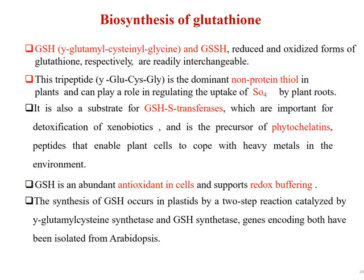Biosynthesis of glutathione: GSH and GSSG, the reduced and oxidized forms of glutathione respectively, are readily interchangeable. This tripeptide is the most dominant non-protein thiol in plants and can play a role in regulating the uptake of sulfate ions by plant roots. It is also a substrate for glutathione S-transferases, which are important for detoxification of xenobiotics, and it is the precursor of phytochelatin peptides that enable plant cells to cope with heavy metals. GSH is an abundant antioxidant in cells and supports redox buffering. The synthesis of GSH occurs in plastids by a two-step reaction catalyzed by gamma-glutamylcysteine synthetase and GSH synthetase, genes encoding both have been isolated from Arabidopsis.